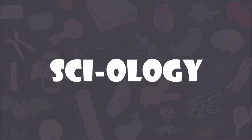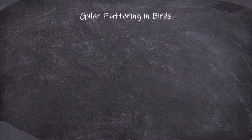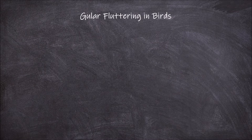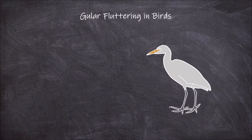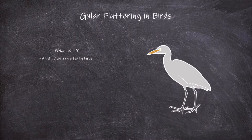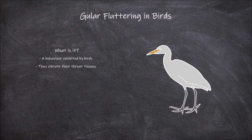Welcome back to my channel. In today's video we're going to go over the behavior in birds known as gula fluttering. Gula fluttering is a behavior exhibited by birds where they vibrate their throat tissues. The throat skin on birds is also known as gula skin, hence the term gula fluttering.